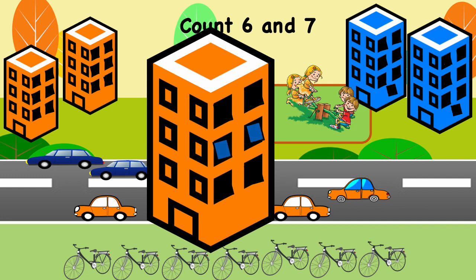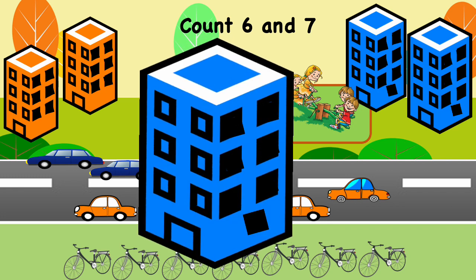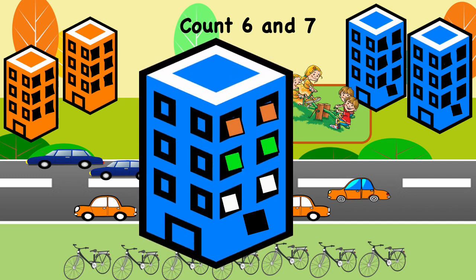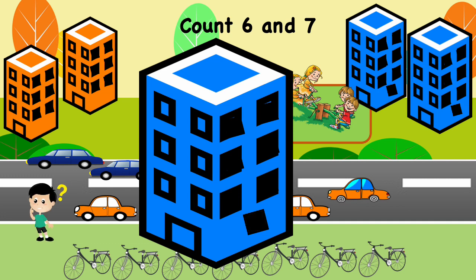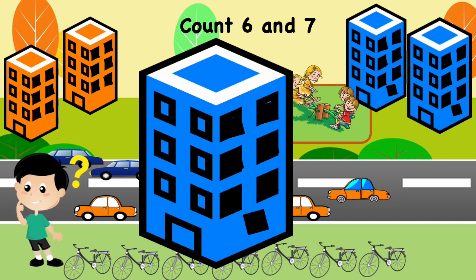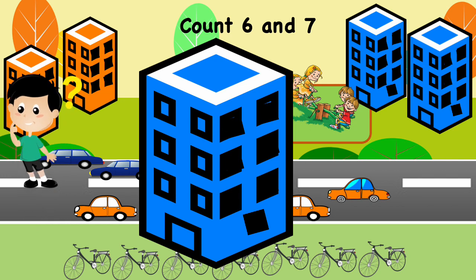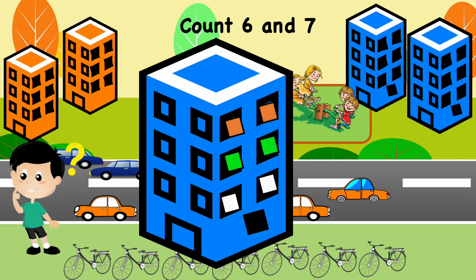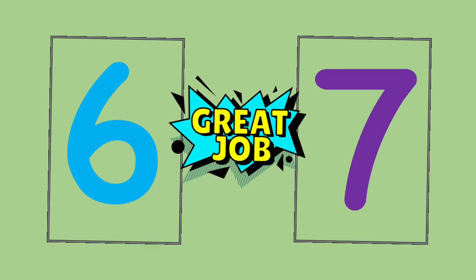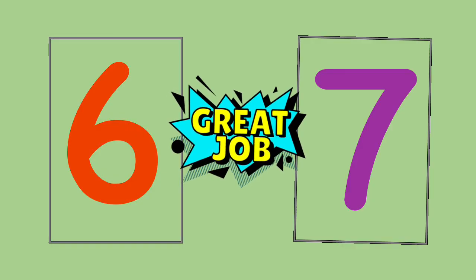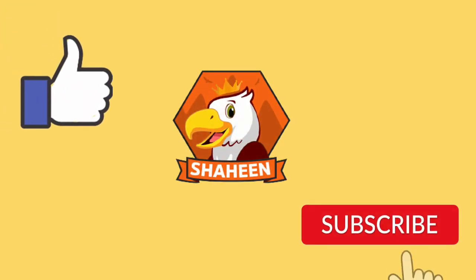1 pair, 2 pairs and 1 more, 3 pairs — you can say there are 6 windows. How about windows in this building? 3 pairs and 1 more — how many windows will that make? Yes, 7 windows — 3 pairs and 1 more. Children, you did a great job counting numbers 6 and 7!